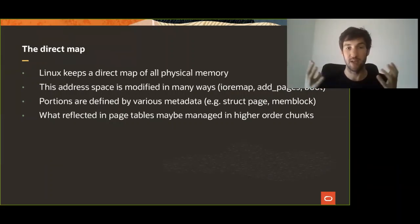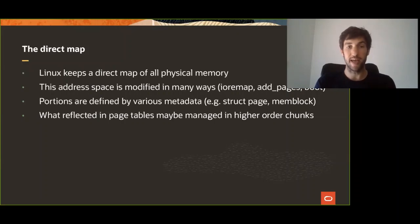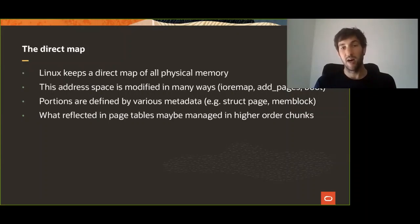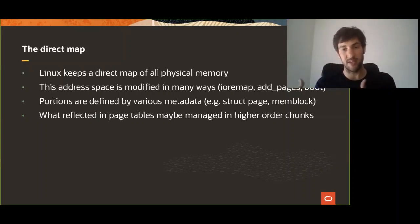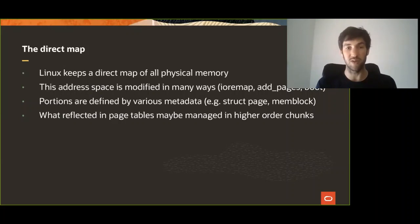We have memblock, which describes blocks of memory. We have the underlying memory model, so vmem_map, which looks like a single contiguous region where each individual address points to struct pages. At the lower end you have small pages, but the other space, managed by what goes in the actual page tables, may be done in bigger chunks. So it's often the case that two megabyte pages are used for the direct map.